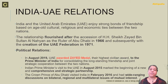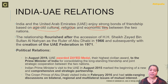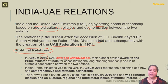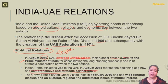Both countries enjoy a strong bond of friendship based on age-old cultural, religious and economic ties. The relationship flourished after the accession of HH Sheikh Zayed bin Sultan Al Nahyan as the ruler of Abu Dhabi in 1966 and subsequently with the creation of the UAE Federation in 1971. In August 2019, UAE awarded the Zayed Medal — the highest civilian award — to the Prime Minister of India for consolidating the long-standing friendship and joint strategic cooperation. The Indian Prime Minister's visit to UAE in August 2015 marked the beginning of a new comprehensive and strategic partnership. The Crown Prince of Abu Dhabi visited India in 2016 and had wide-ranging discussions on bilateral, regional and multilateral issues of mutual interest.